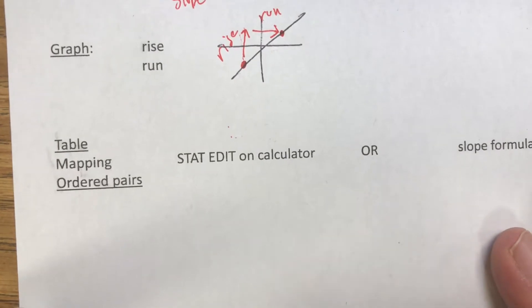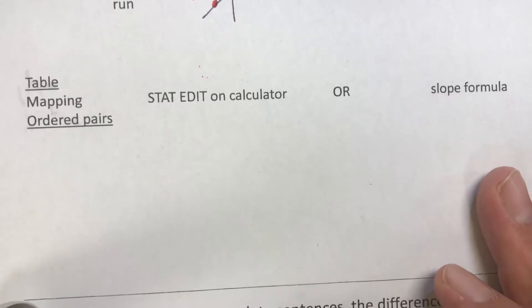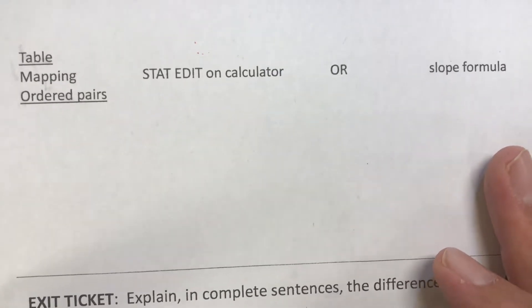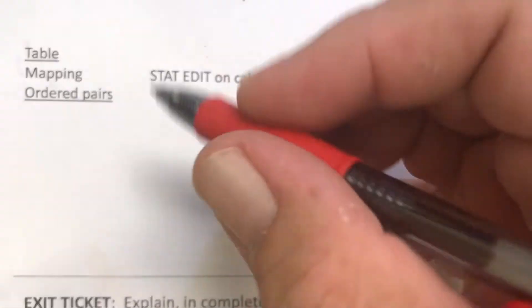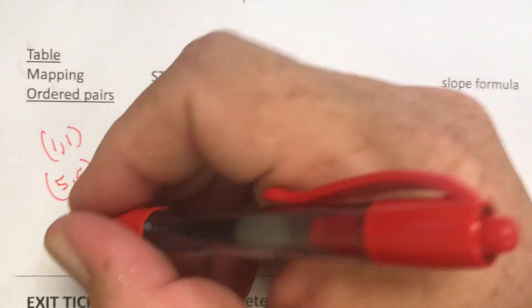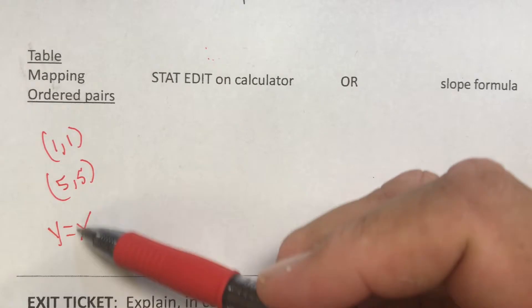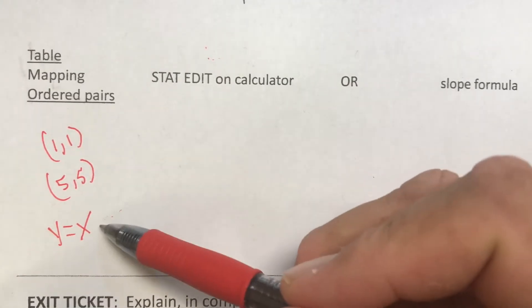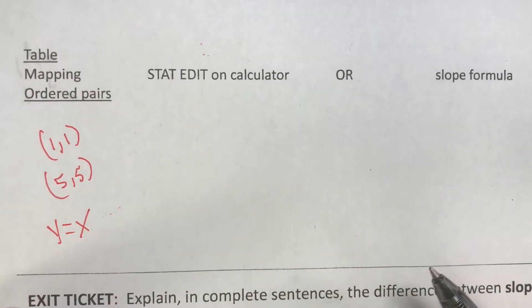Next we have a table or a mapping or ordered pairs. Anytime they give us a list of points, then all we have to do is put that into STAT EDIT in our calculator. I'm just going to use a real simple example to show you how that works. We'll use the point (1,1) and the point (5,5). This is from the equation y=x. The number in front of x is 1 so our slope should be 1, and there's no y-intercept because there's nothing there, so our b is going to be 0.